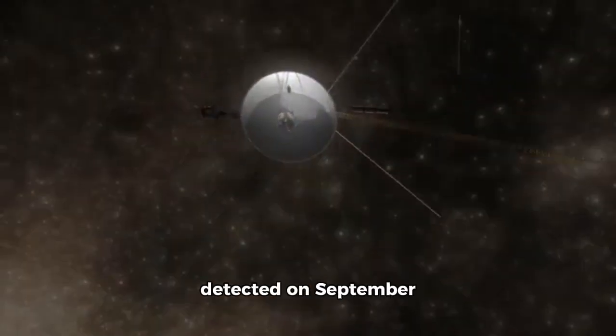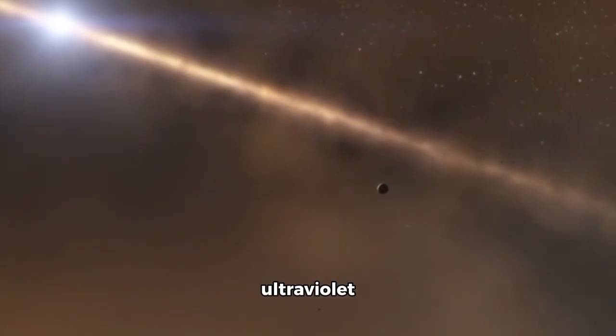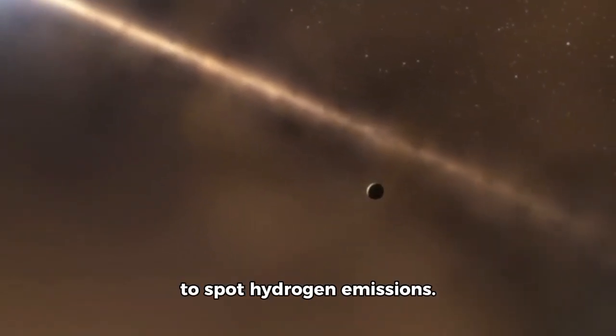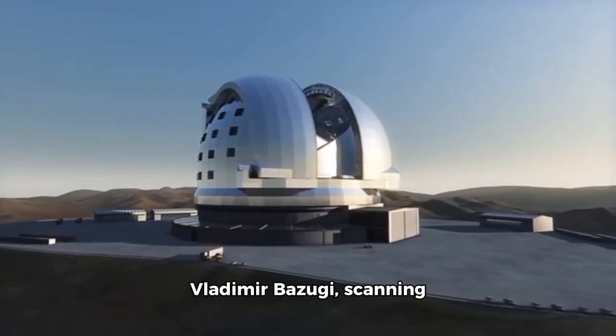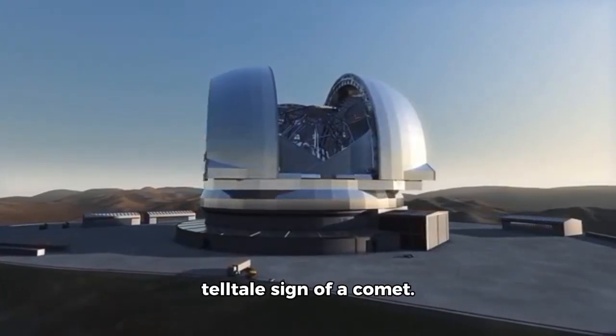Swan was first clearly detected on September 11 by SOHO's ultraviolet instrument designed to spot hydrogen emissions. Vladimir Buzugi, scanning the data, recognized a faint new streak, a telltale sign of a comet. Within hours, the Minor Planet Center confirmed the sighting and officially designated it C/2025 R2 Swan.